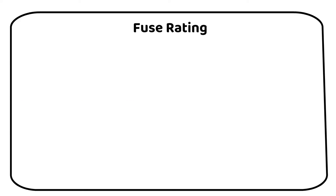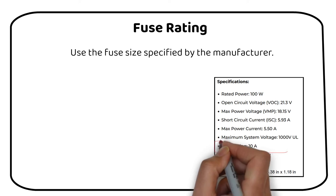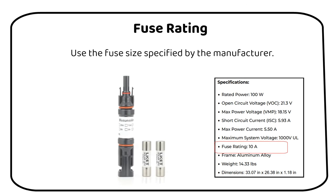We need a fuse between the solar panels and the charge controller. The size of the fuse will be indicated on the back of the solar panel. In this case the maximum series fuse is 10 amps. We will use a 10 amp MC4 fuse.